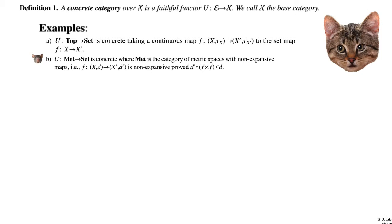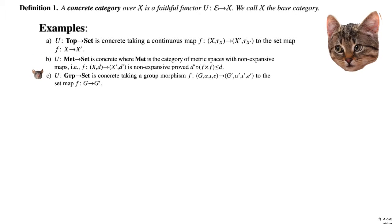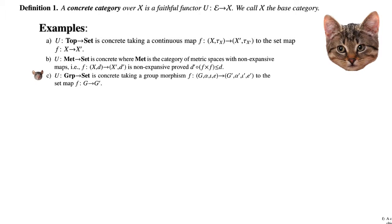Another example, this one algebraic, is the forgetful functor from the category of groups to Set. This takes group morphisms and forgets all the operations that give a group structure on these groups.